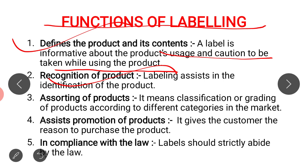Another function of labeling is that it helps in the recognition of the product. Labeling helps in identifying and recognizing the product in the market. For example, if a particular brand of chocolate exists in the market and you prefer that chocolate, even if other confectionery items are available, you will still choose it. The label on the chocolate wrapper — whether it is Dairy Milk, KitKat, or another brand — helps you choose from the rest of the confectionery items available.